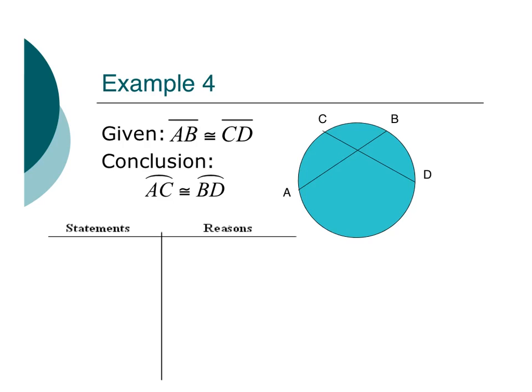If I prove that these two chords, sorry, these two arcs are congruent because the chords are congruent, and then I go ahead and use some subtraction property, subtract CB, now I have two congruent arcs, which is exactly what I want. So three steps. Let's do it.